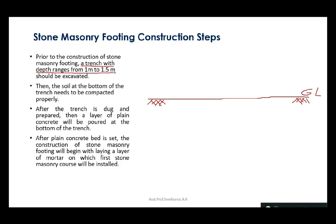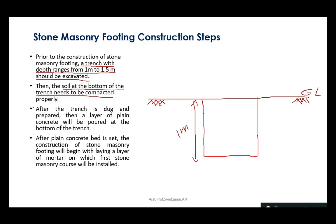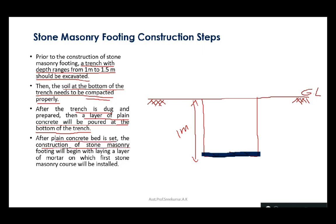Now let's examine the construction steps for stone masonry footing. Prior to construction, a trench with depth ranging from 1 meter to 1.5 meters should be excavated. The soil at the bottom of the trench needs to be compacted properly. After the trench is dug, a layer of plain cement concrete (PCC) will be poured at the bottom. After the PCC is set, the first stone masonry courses can be installed with a layer of mortar underneath.